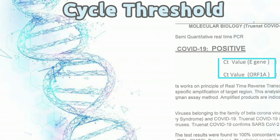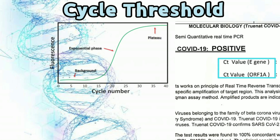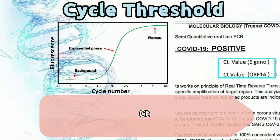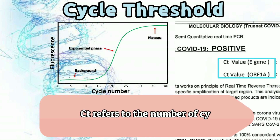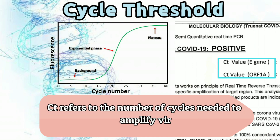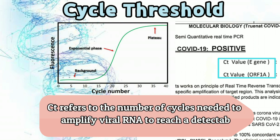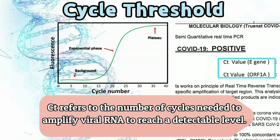Now here comes cycle threshold, or CT. It indicates the number of cycles needed in an RT-PCR test to amplify viral RNA so that it can reach a detectable level.